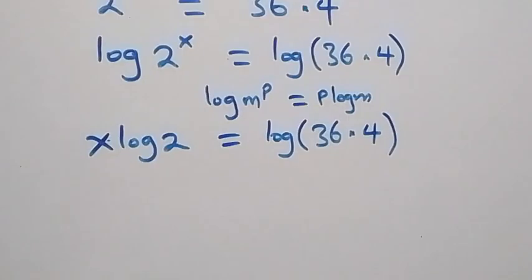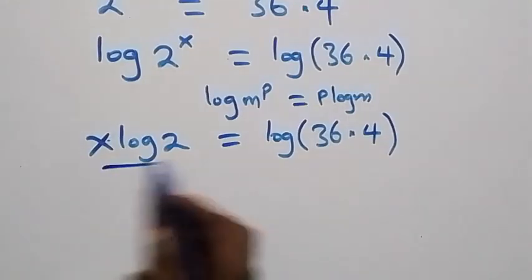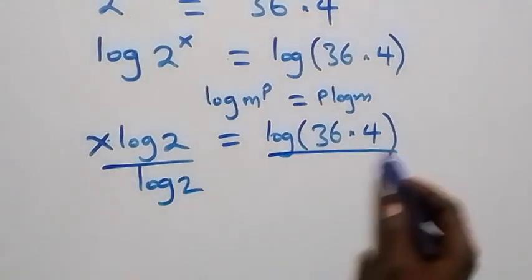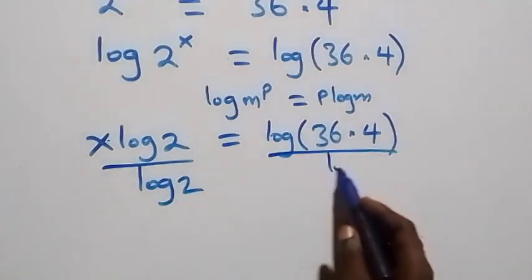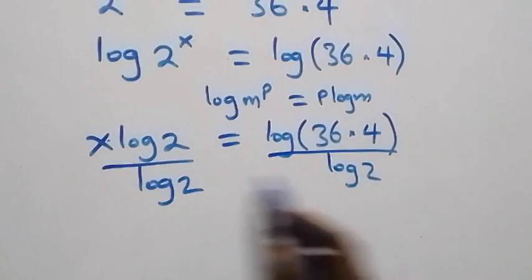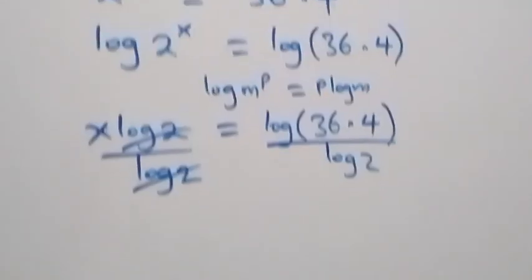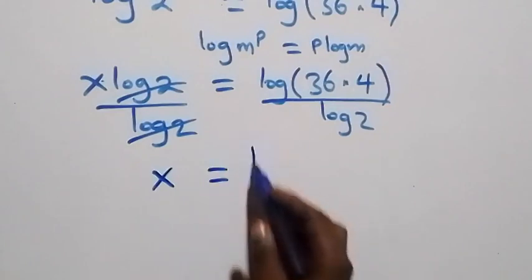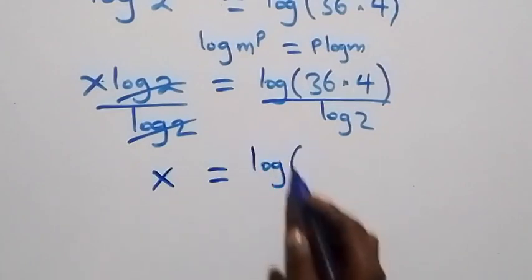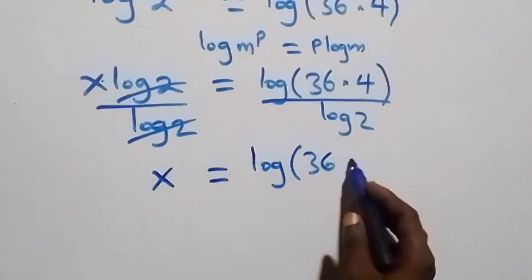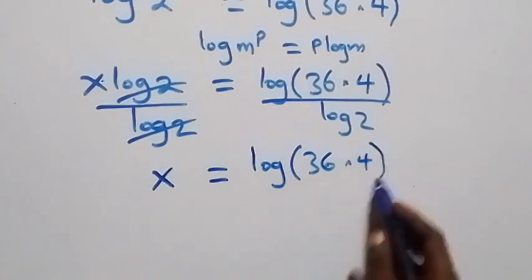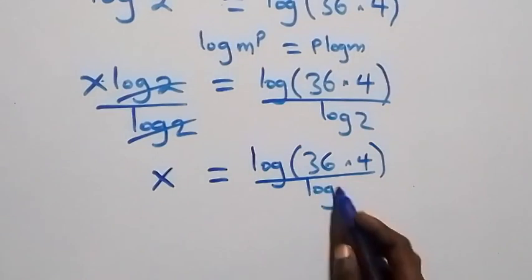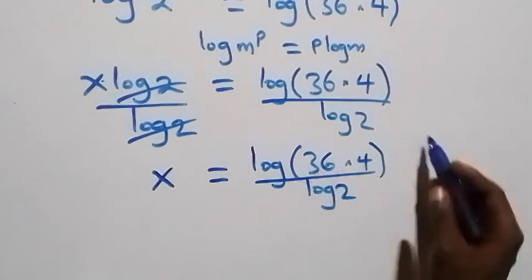The next step: we divide both sides by log 2. Log 2 cancels on the left, and we are left with x equals log 36 times 4 over log 2.